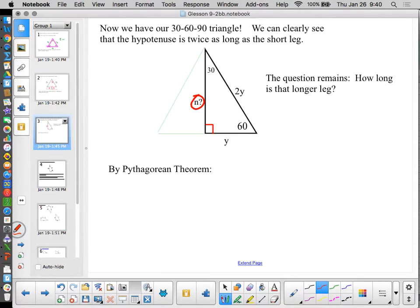Let's use Pythagorean theorem to find out. For the moment, I'm going to call this side N. So Y squared plus N squared equals 2Y squared. Not just 2Y squared, but 2Y quantity squared. So Y squared plus N squared. When I square 2Y, I get 4Y squared. Because 2 squared is 4 and Y squared is Y squared.